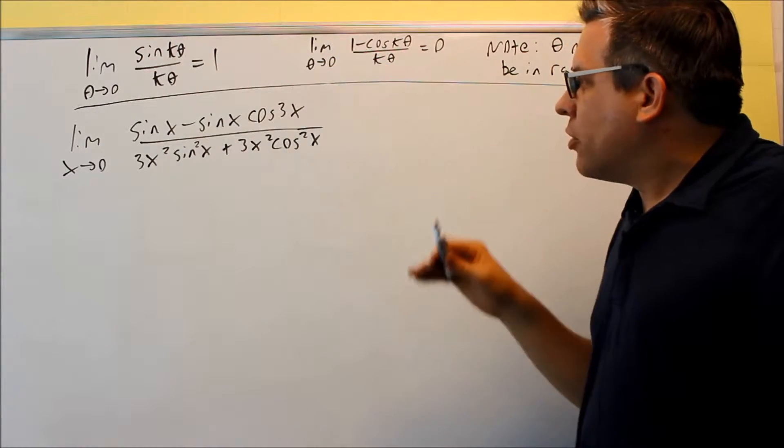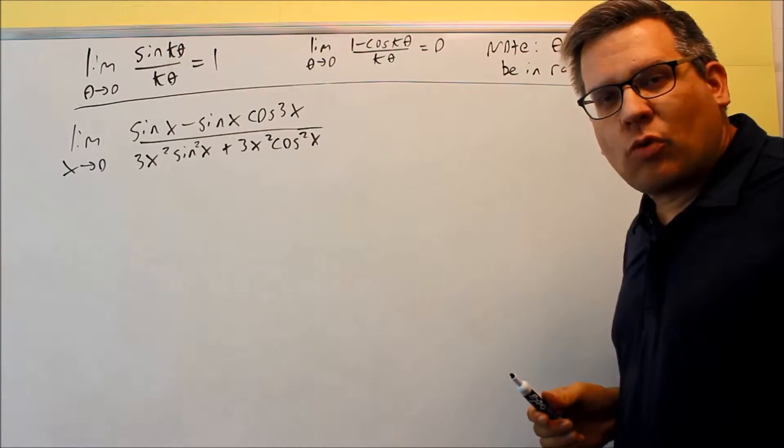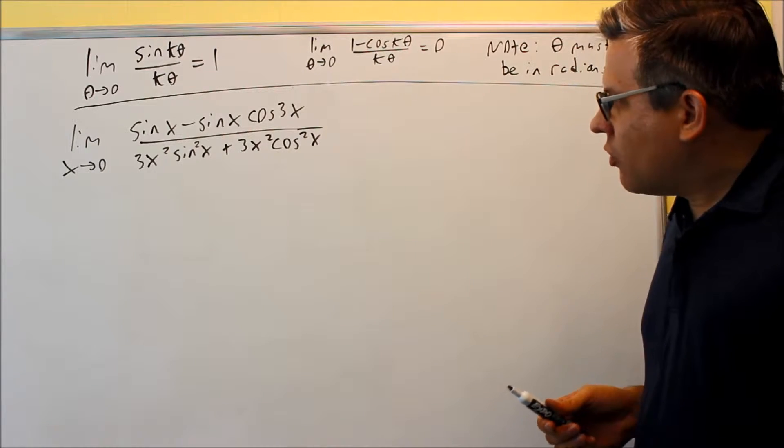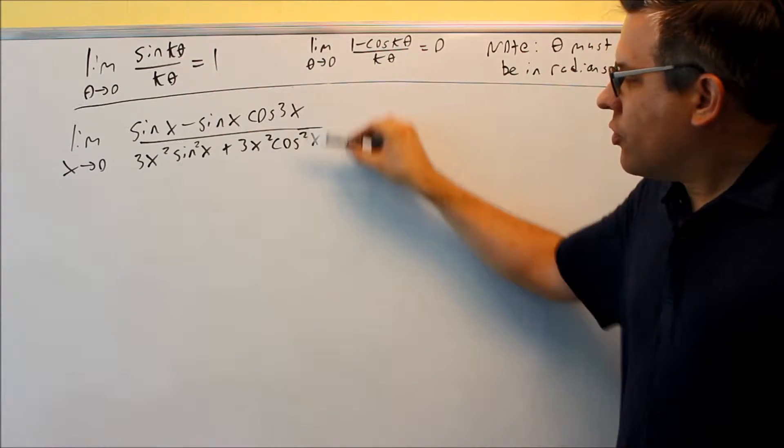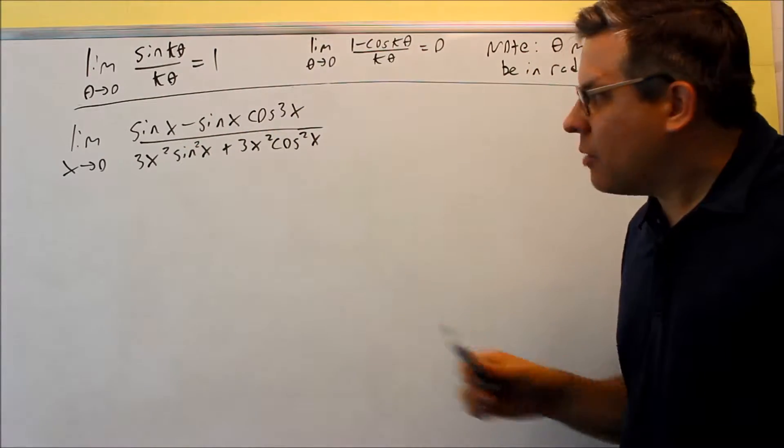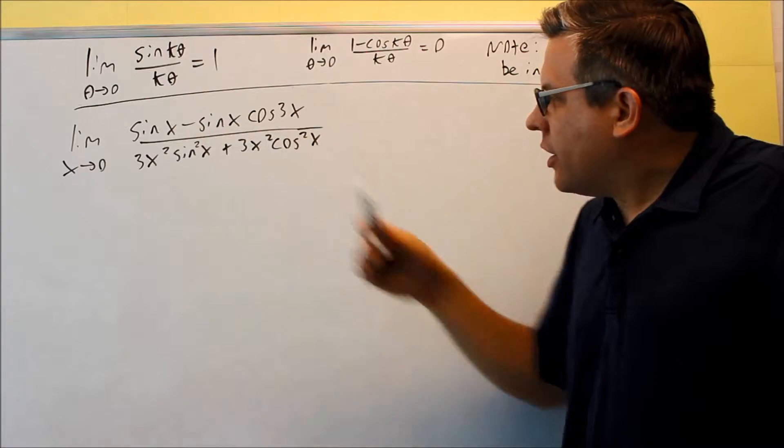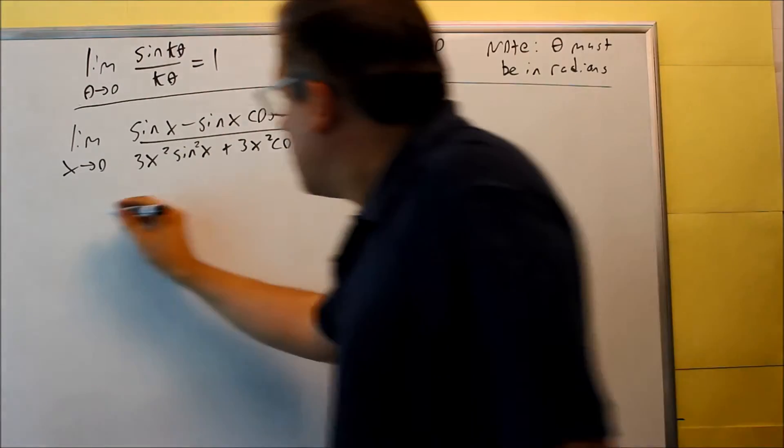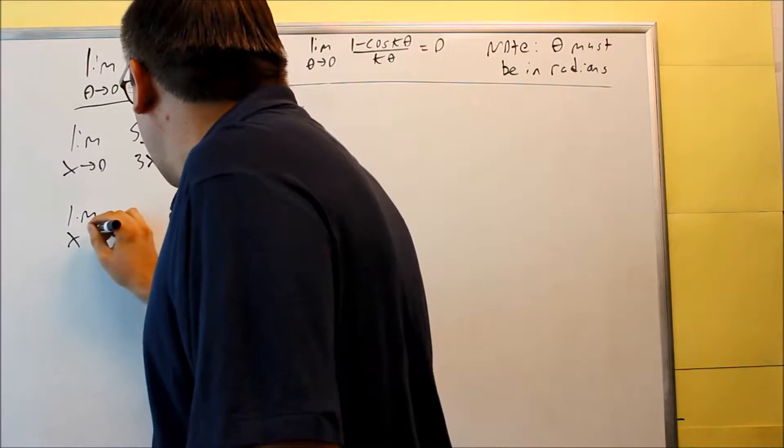We're going to apply both these properties to this particular one here. So for this one we need to do some factoring first. On top we have a common factor of sine that repeats so we can pull that one out. On the bottom we have a 3x squared that repeats. So we're going to do that top and bottom, we're going to pull that out.